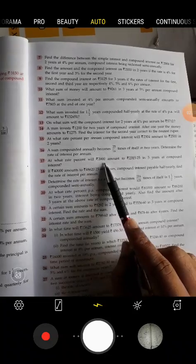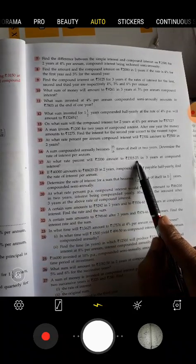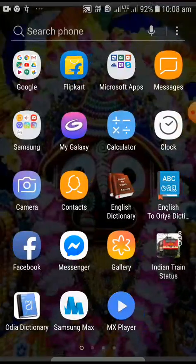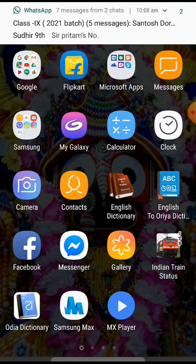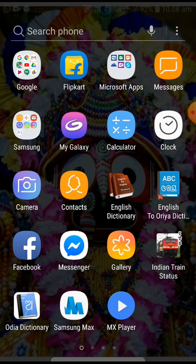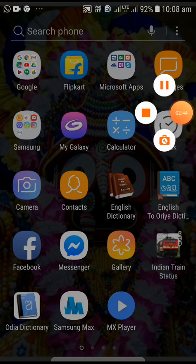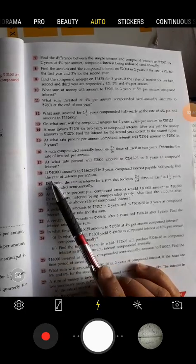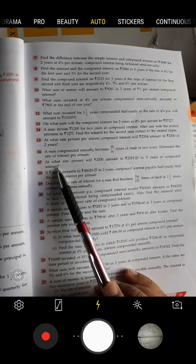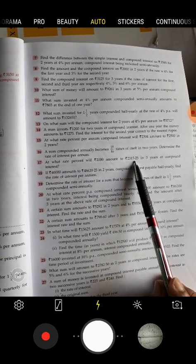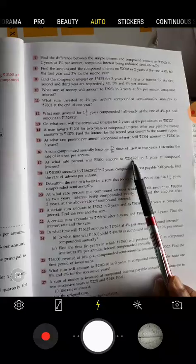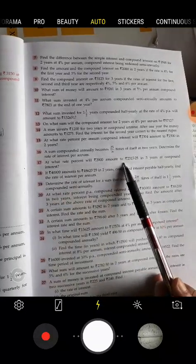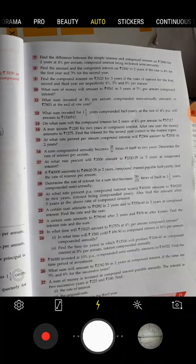Next comes 17 number. At what rate percentage will 2000 rupees amount to 2315.25 rupees in three years? At what rate percentage, that means we have to find what rate percentage. So this is our rate percentage we have to find. 2000 rupees amount to 2315.25 rupees in three years at compound interest.